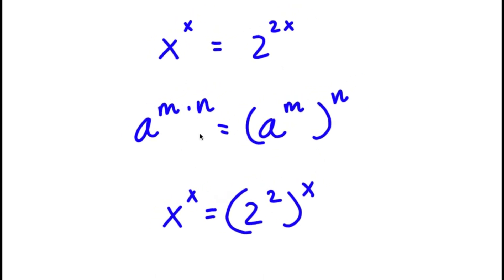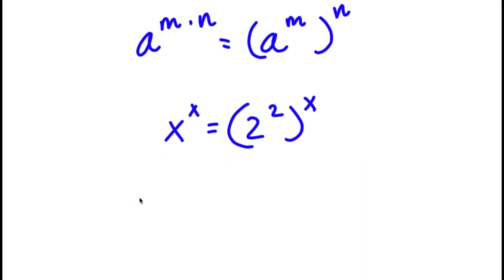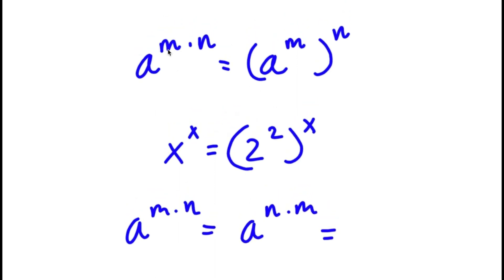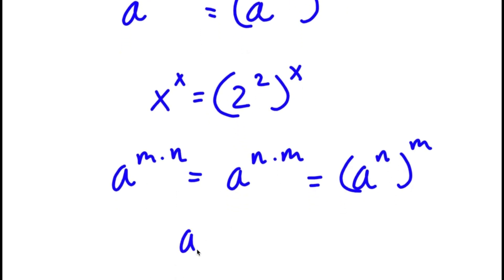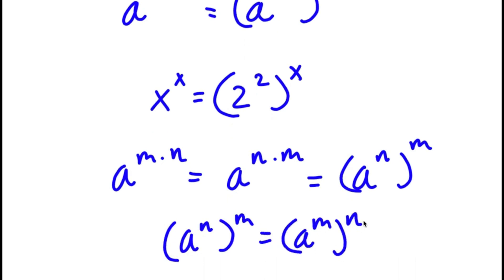Now, a to the power of m times n is also equal to a to the power of n times m — we can switch the order. So if a to the power of m times n equals a to the power of m to the power of n, then a to the power of n times m equals a to the power of n to the power of m. If these two are equal, then a to the power of n to the power of m equals a to the power of m to the power of n.